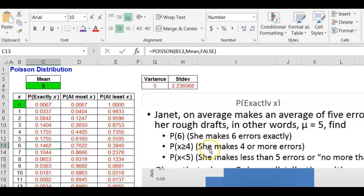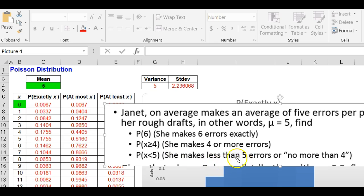Find the probability she makes four or more errors. That's at least four. Four or more. Probability of four or more is 0.735 to the right of four under at least.